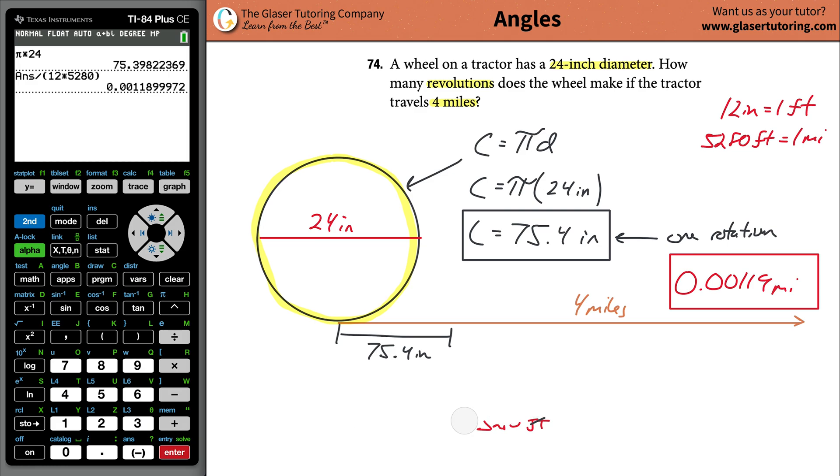If this is the total length that has to be traveled, and you know that every single revolution travels a total distance of 0.00119 miles, what you will do now is a division. Total length traveled divided by the circumference will equal the number of revolutions or rotations. You just got to make sure you have consistent units.